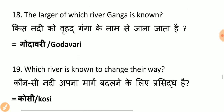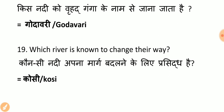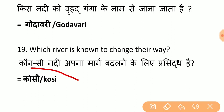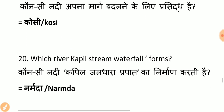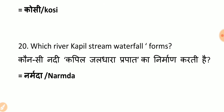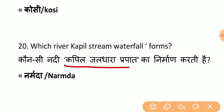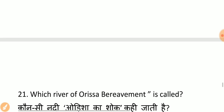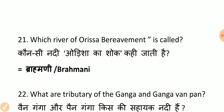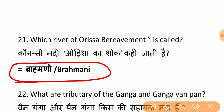Which river is known for changing its course? Kosi river is well known for changing its course. Remember, Kosi river is also the Sorrow of Bihar. Which river forms the Kapil Jaladhar (Kapil Stream) Waterfall? Narmada river forms the Kapil Jaladhar Waterfall. Which river is called the Sorrow of Odisha? Brahmaini river is called the Sorrow of Odisha. So we have Bihar, Bengal, and now Odisha covered.